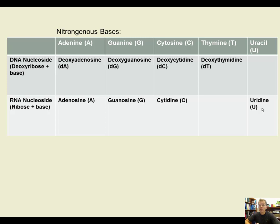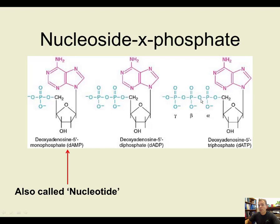If you're talking about all three — the base, the sugar, and the phosphate — then it becomes a nucleotide. Another way to describe this is a nucleoside with a single phosphate, or a monophosphate. For example, deoxyadenosine 5' monophosphate is abbreviated as dAMP. If you add an additional phosphate it becomes diphosphate, or with three phosphates, triphosphate.